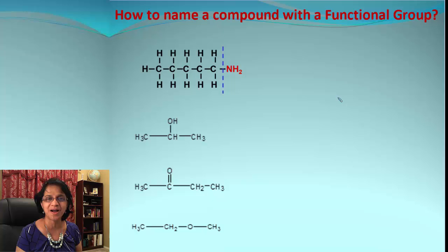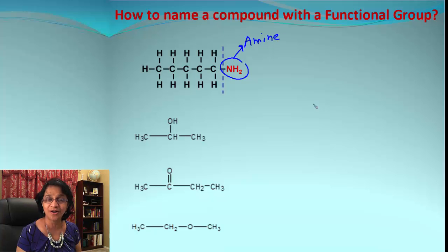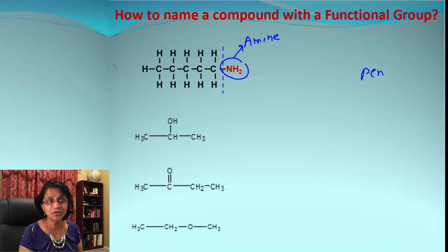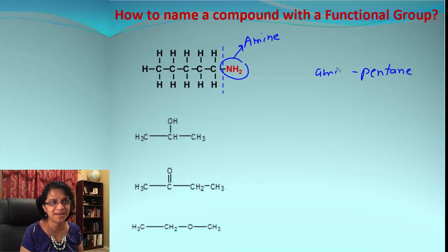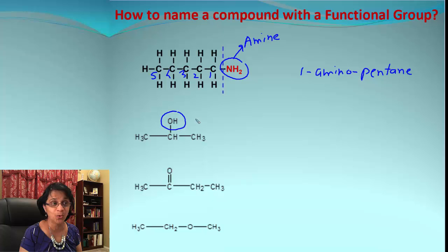Are you ready to name a compound with functional groups? Here's our first example. Look at this — that's an NH₂ group, which corresponds to an amine or amino group. The parent chain has five carbon atoms, so it's 'penta.' There's no double or triple bond, so this will be pentane, and with the amine group it will be aminopentane. I always start numbering from the carbon atom nearest to the functional group, so it is 1-aminopentane.